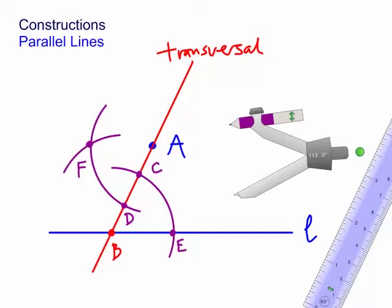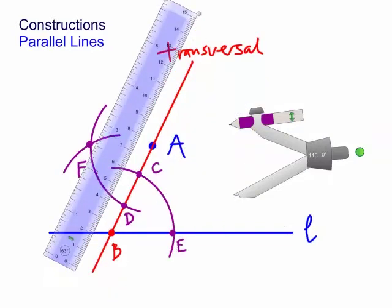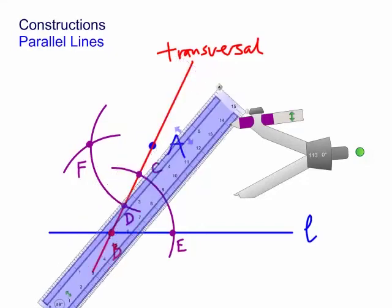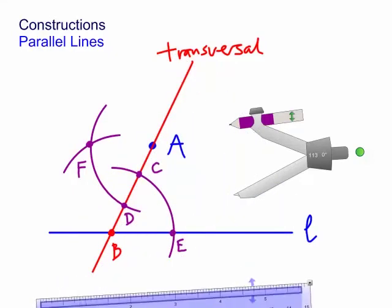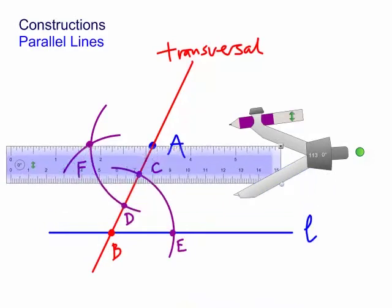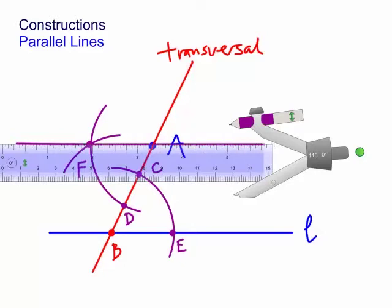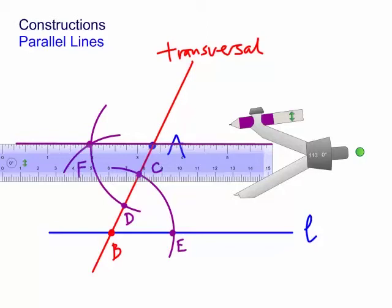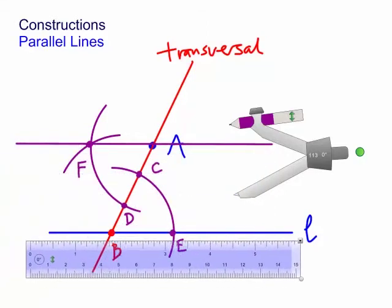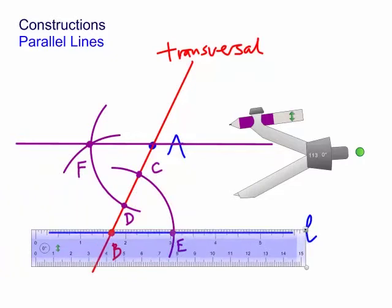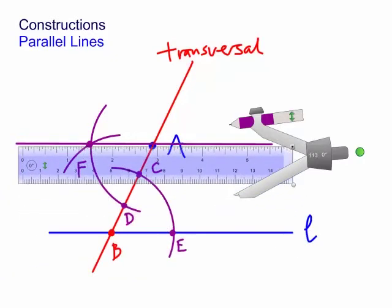We have to draw a line through A and F. Get our ruler out again. If you do this reasonably accurately, you can see that this line through A and F is now parallel to line L down here. So that's a fairly reasonable demonstration.